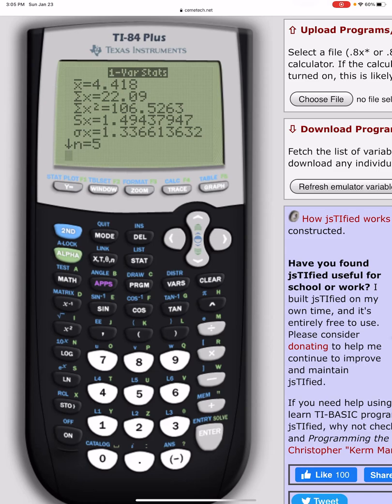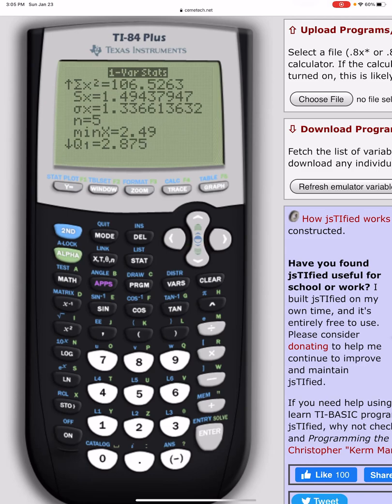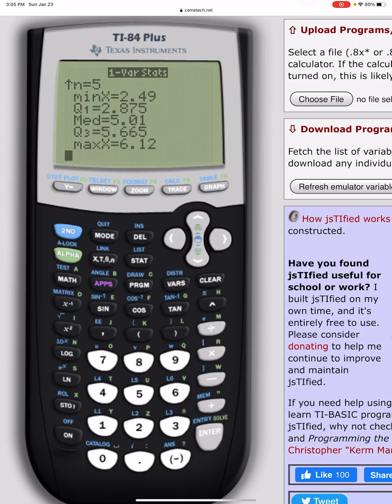If I hit the down arrow, it tells me the min value, the Q1, the median, the Q3, and the max. Right there is your five-number summary.